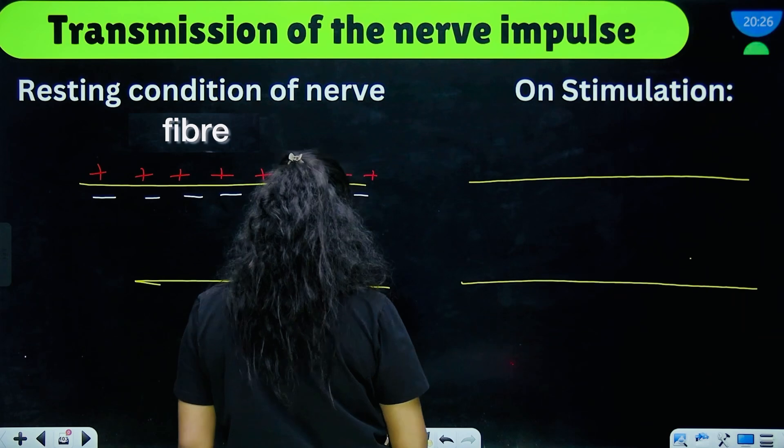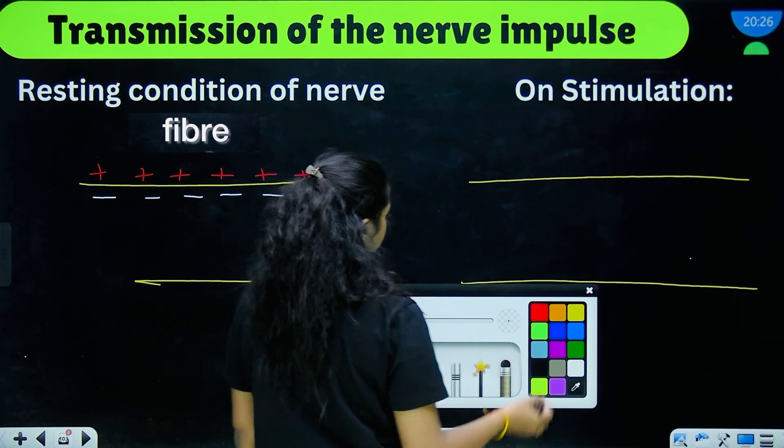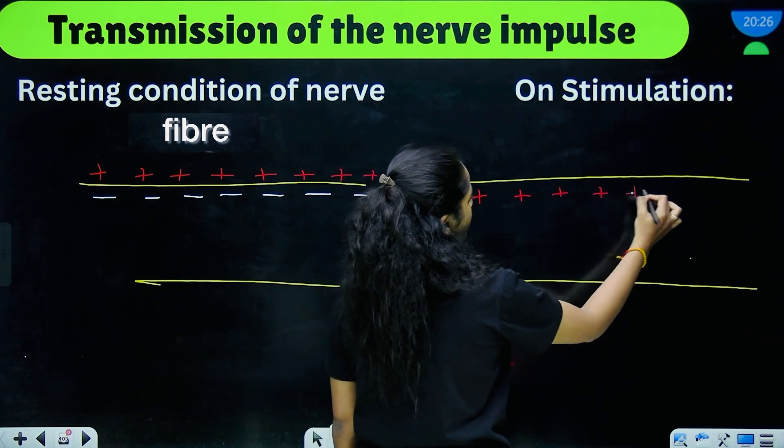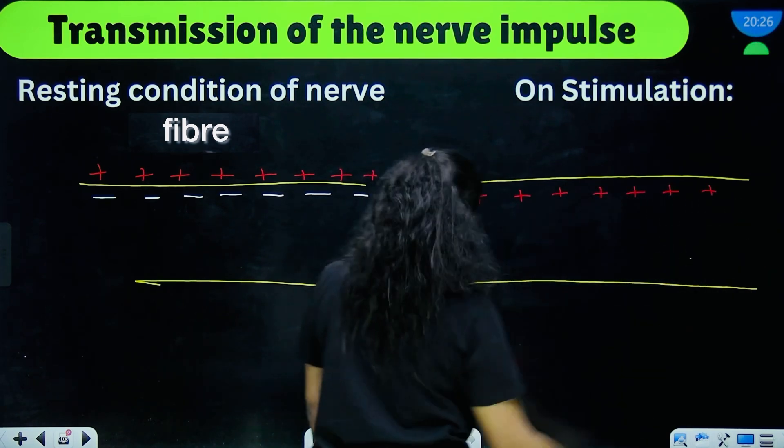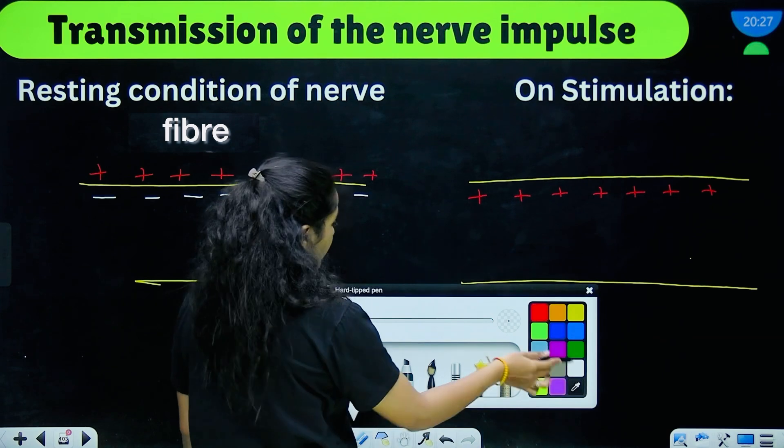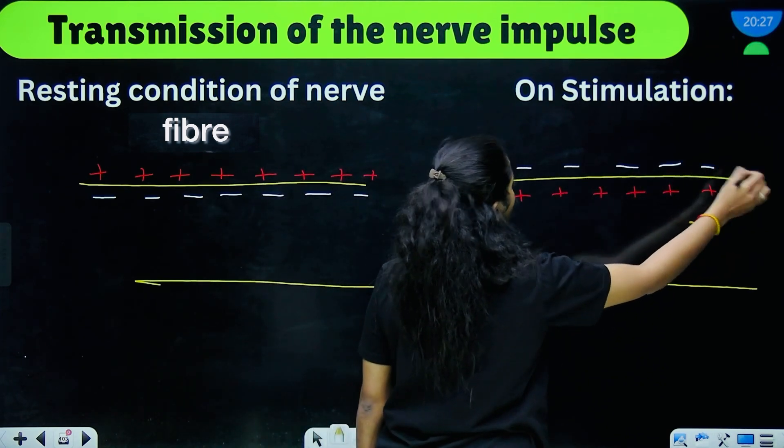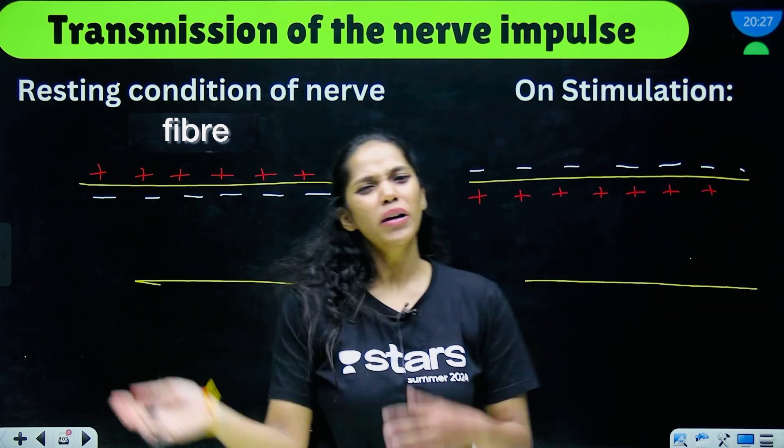But when a nerve fibre is stimulated, it becomes the opposite with the positive ions on the inside of the nerve fibre and the negative ions on the outside of the nerve fibre. Yeah, but they do go back to the resting condition.